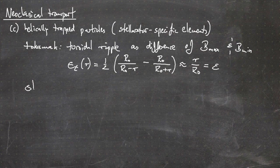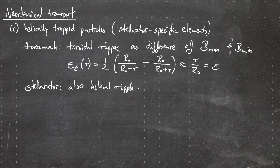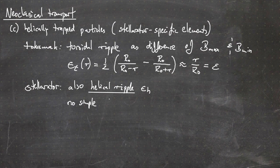In a stellarator, in addition to the toroidal ripple, we have the helical ripple ε_H. Unfortunately, there is no simple relation for the helical ripple like the one in the tokamak for the toroidal ripple.